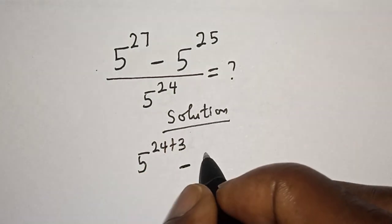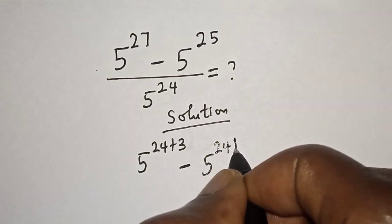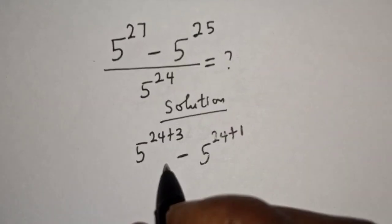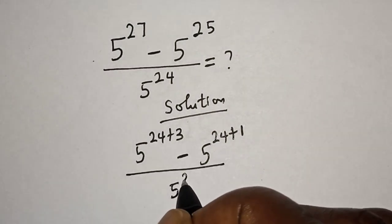minus 5 raised to power 25, which can be written as 5 raised to power 24 plus 1, then over 5 raised to power 24.